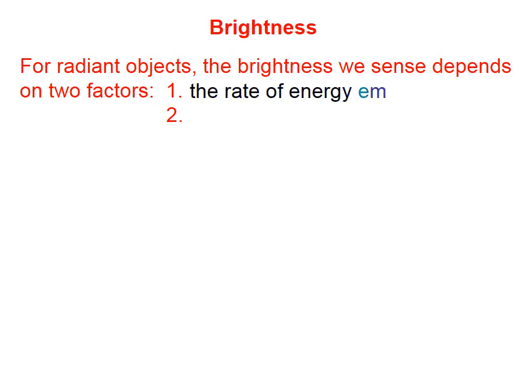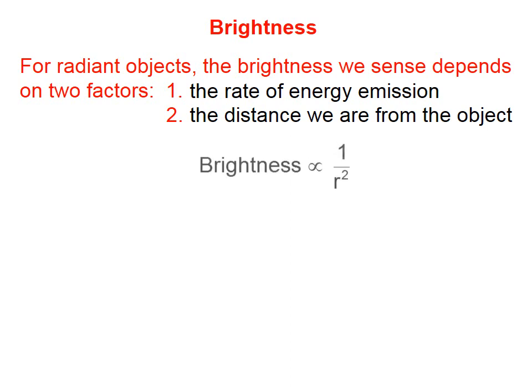For radiant objects, the brightness we sense depends on two factors: the rate of energy emission and the distance we are from the object.